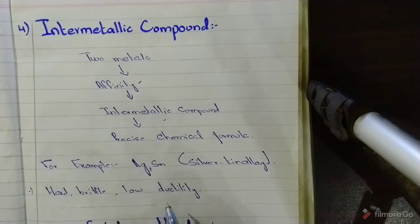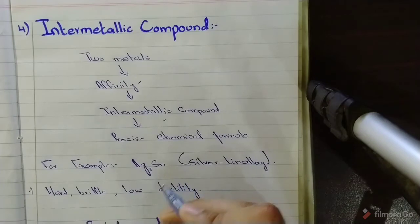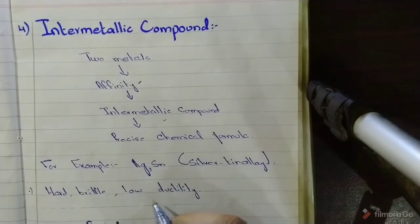These intermetallic compounds will be hard, brittle, and they will have low ductility. Because they have particular valence stability, there will be less deformity in the crystal structure, so they will resist dislocation along slip planes. That's why they have low ductility.